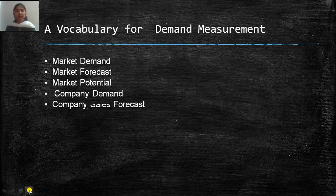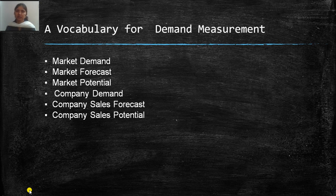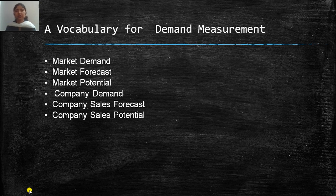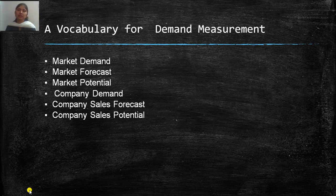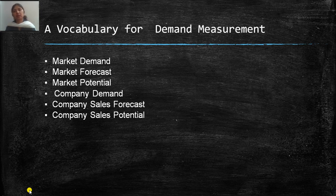Company demand is the company's percentage of market share in accordance with company expenditure. Company sales forecast is the total share the company has in accordance with the marketing environment in a given marketing program. Company sales potential is the limit achieved relative to competitors in accordance with marketing effort and expenditure.